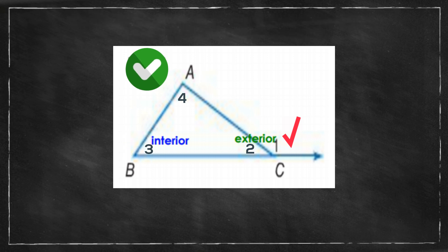Next, angles 1 and 2, the exterior and the interior, are called a linear pair and they are supplementary which means they are equal to 180 degrees. You can use this information to find missing angles.